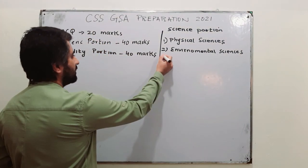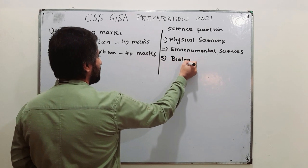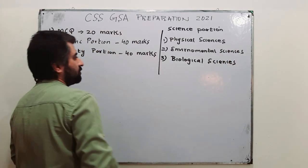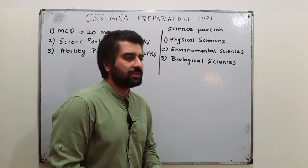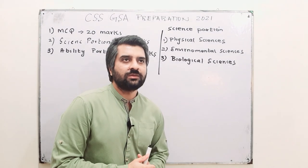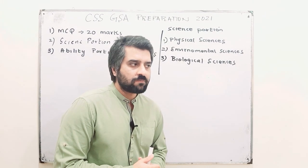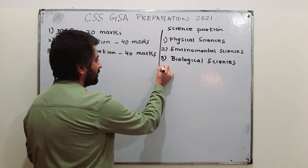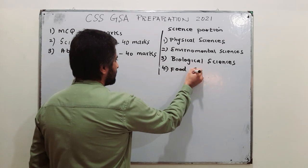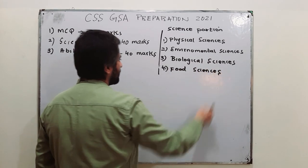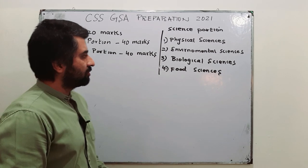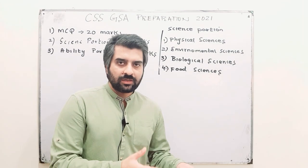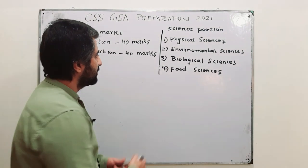Then we have a section of biology — biological sciences — in which we are going to study basics of biology, cell, and human physiology. Then we have food sciences, which is component number four, where we study the concept of balanced diet, how we can preserve food, and one or two more components like that. The last one is the computer or IT portion — information technology — which is the fifth portion of your science section.